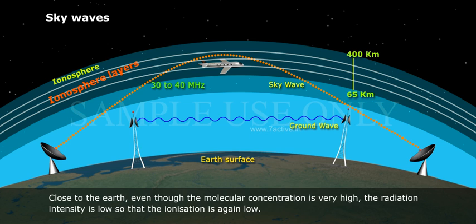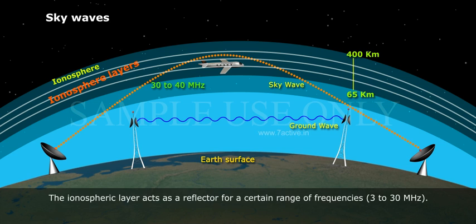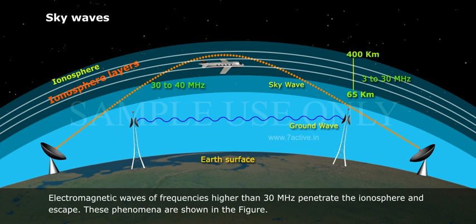However, at some intermediate heights there occurs a peak of ionization density. The ionospheric layer acts as a reflector for a certain range of frequencies, 3 to 30 megahertz.